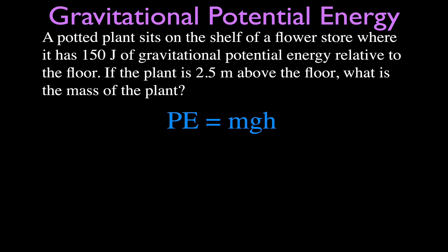We're going to solve for the mass this time. We have a potted plant sitting on a shelf of a flower store where it has 150 joules of gravitational potential energy relative to the floor. You see, in order to have potential energy, you have to be above something, relative to some other surface. The change in potential energy from the ground floor where it would have zero joules up to the shelf is 150 joules. The plant is 2.5 meters above the floor. What is the mass of the plant?